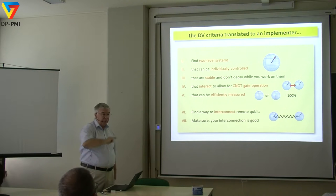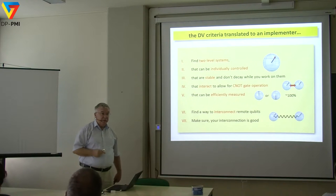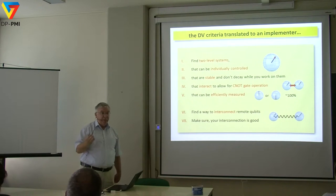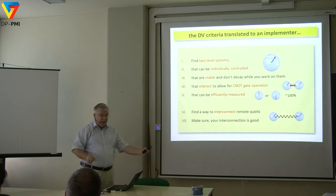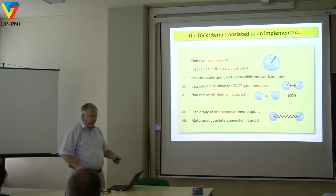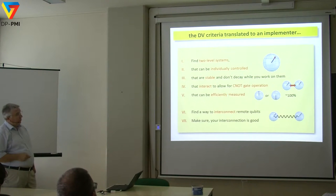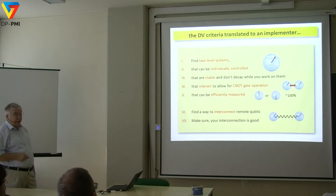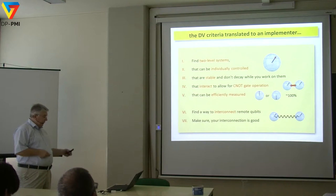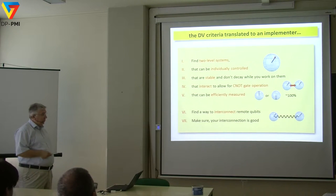I won't have time to go into the teleportation stuff unless you ask. You need to be able to efficiently measure these systems — projecting them — with nearly 100% efficiency. If you have less efficiency, you lose information. And in the end, you want to do networking, ensuring interconnection between remote qubits. Let's go to the basis of the quantum computer for the ion trap.